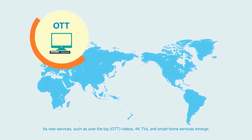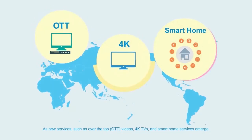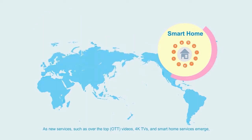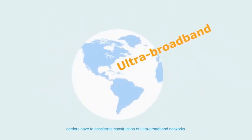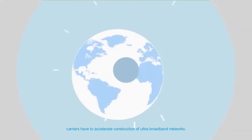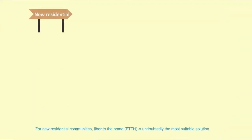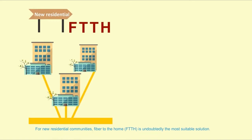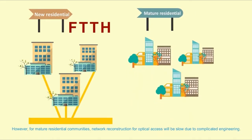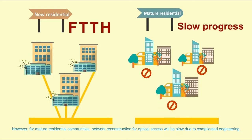As new services such as over-the-top videos, 4K TVs, and smart home services emerge, carriers have to accelerate construction of ultra-broadband networks. For new residential communities, fiber to the home is undoubtedly the most suitable solution. However, for mature residential communities, network reconstruction for optical access will be slow due to complicated engineering.